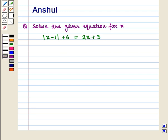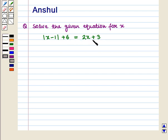Hello and welcome to the session. In this session we are going to discuss the following question: Solve the given equation for x, where the equation is absolute value of (x minus 1) plus 6 is equal to 2x plus 3.